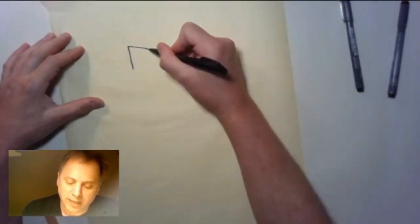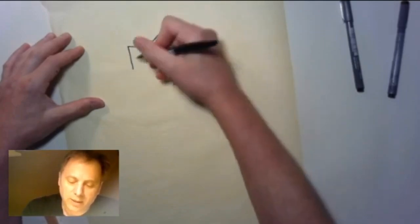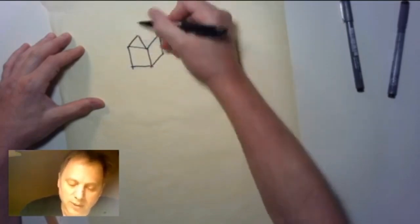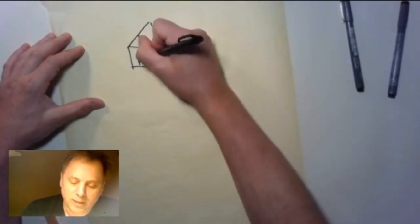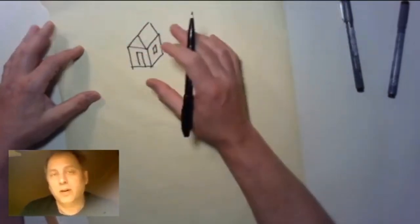You might start by thinking of a building that is just a simple cube. Let's give it a gable so it's a little house, right, with a window over here and a door over here.